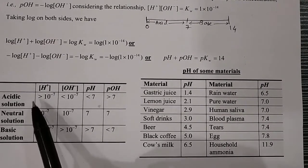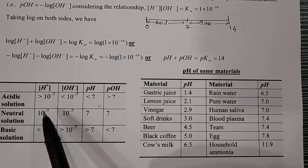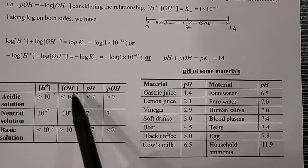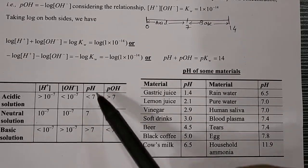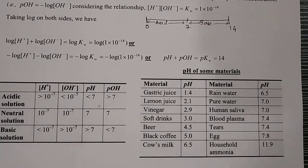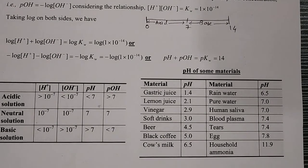In an acidic solution, H+ concentration is greater than 10⁻⁷, OH− concentration is less than 10⁻⁷, pH is less than 7, and pOH is always greater than 7.